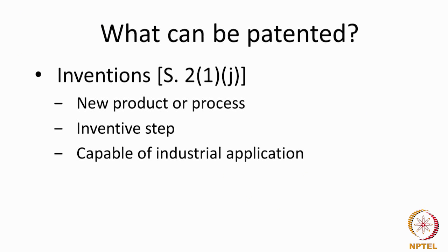For instance, if somebody envisages an invention as an abstract idea — no product comes out of it, no process of manufacturing or working it is described — it just remains an idea. For example, somebody comes up with a bright idea of making a cycle that you could pedal to the moon. That remains an abstract concept; it cannot be worked out and there can be no product from it. Abstract ideas cannot be patented. A patent should manifest itself as either a product or a process.